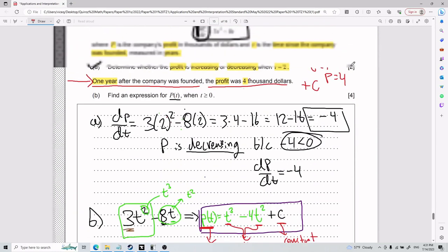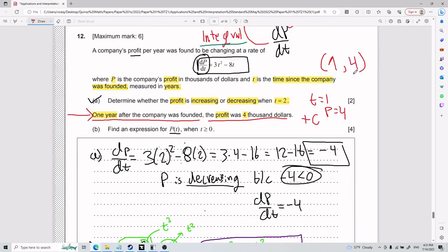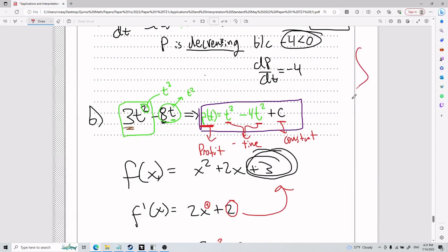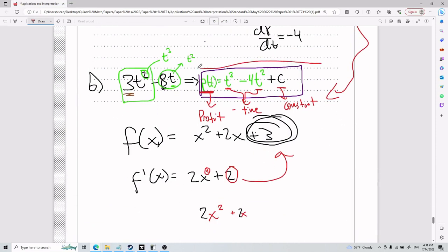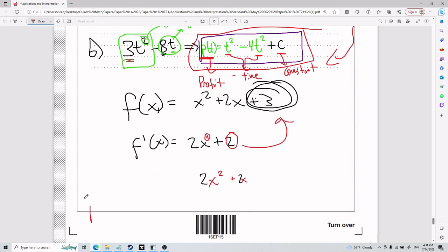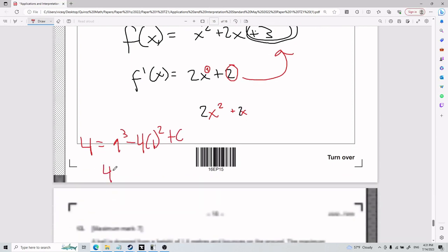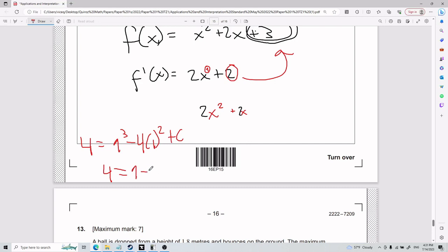So if I take this 1, 4 and plug it in, I end up with 4 equals 1 cubed minus 4 times 1 squared plus c. So 4 equals 1 times 1 times 1 is 1 minus 4 times 1 plus c. That tells me that we have 4 equals c minus 3, which means that c equals 7.